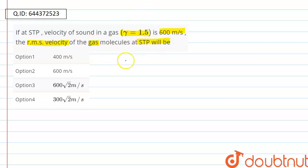So we know that speed of sound v_sound is given as under root of gamma RT upon m, where gamma is given 1.5.